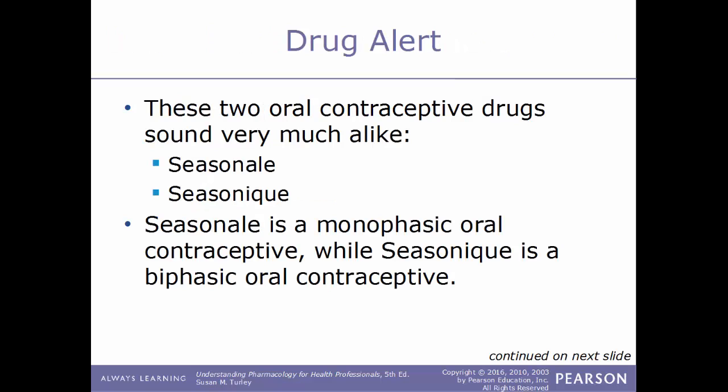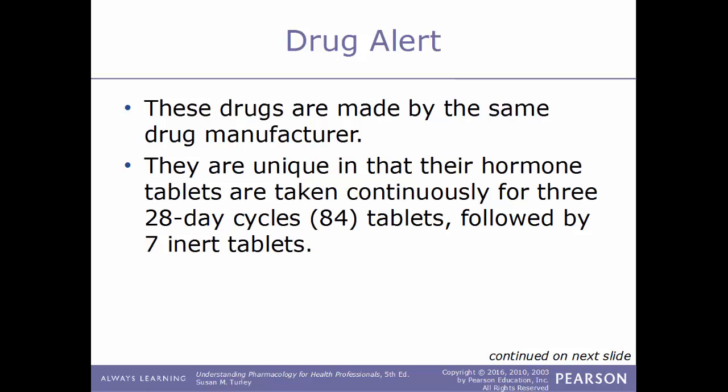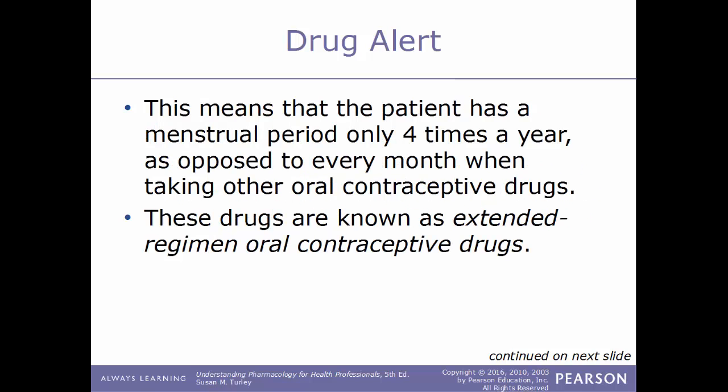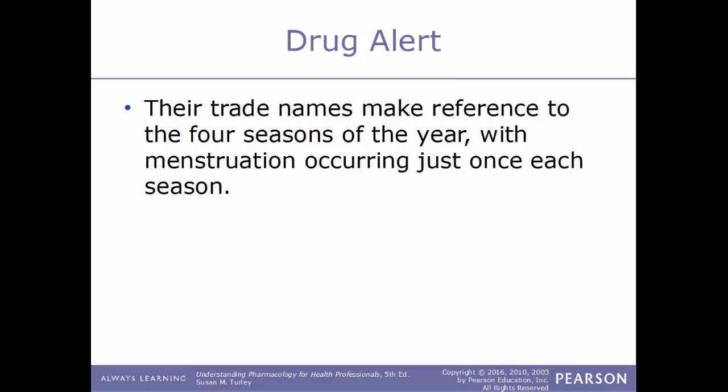Seasonale and Seasonique sound very similar but are very different — Seasonale is a monophasic contraceptive and Seasonique is a biphasic contraceptive drug. These drugs are made by the same manufacturer and are unique in that hormone tablets are taken continuously for three 28-day cycles (84 tablets), followed by seven inert tablets. This means the patient has a menstrual period only four times a year. These are known as Extended Regimen Oral Contraceptive Drugs, with trade names referencing the four seasons, as menstruation occurs only once per season.